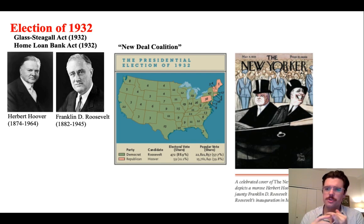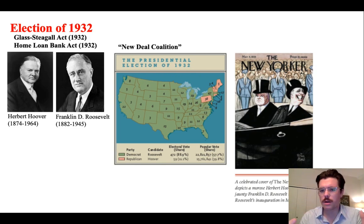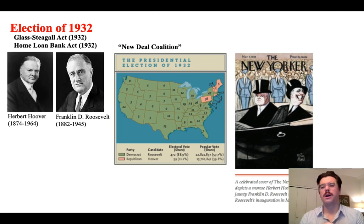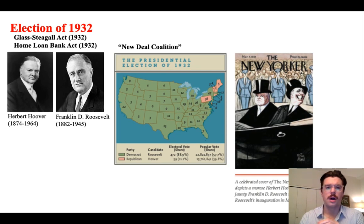Rather, he's leaving it to states to repair their own economies, and he's really encouraging philanthropy to ameliorate some of the negative impacts of the economic downturn. We can see this in the Glass-Steagall Act, as well as the Home Loan Bank Act, which were two pieces of legislation initiated under Herbert Hoover, but later ratified and passed under FDR. So FDR gets a lot of credit for those two pieces of legislation, but they're really initiated under Herbert Hoover.